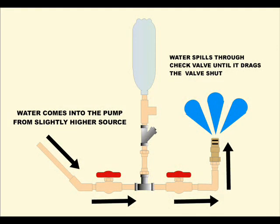Water comes into the pump from a slightly higher source such as an incline in a natural waterway. The water spills out through the check valve at the right of the figure until the valve is dragged shut by the water itself.